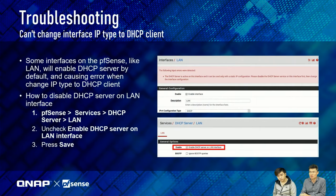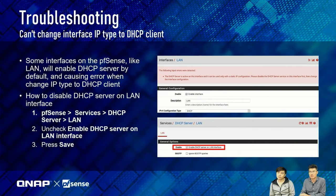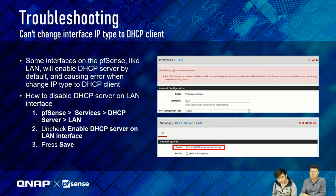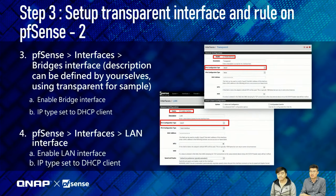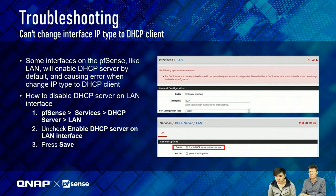You'll encounter an error when trying to set the LAN interface to DHCP client, because PFSense has a DHCP server enabled on LAN by default (NAT mode). To fix this, go to Services > DHCP Server > LAN interface and uncheck 'Enable DHCP server on LAN interface', then save. Now you can go back to the LAN interface and change IP type to DHCP client successfully.